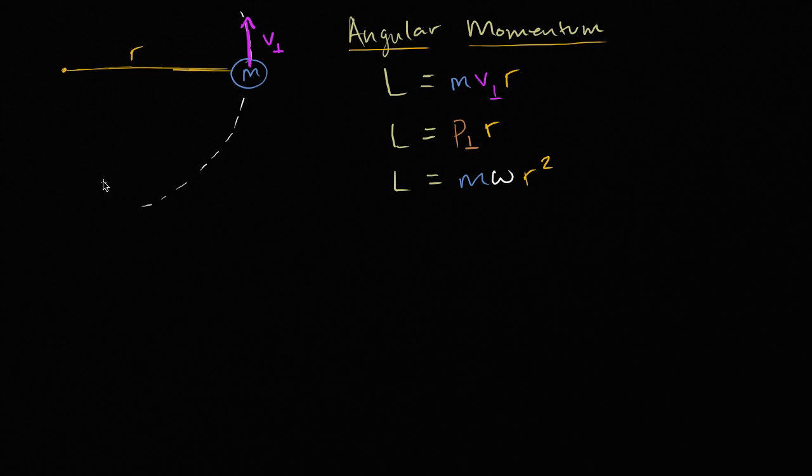And let's say it's on a frictionless surface, and let's say it has some velocity. And right here, we have the magnitude of its velocity in the direction that is perpendicular to the wire that is holding it, or I guess you'd say perpendicular to the radial direction.